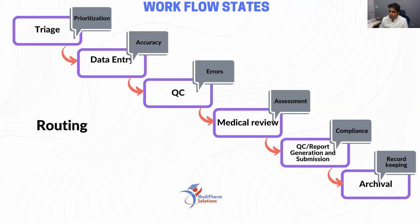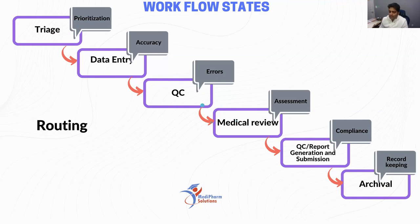What are some of the scenarios where you will back route a case? You will back route a case if you are doing too many case corrections that the previous case owner should be doing. For example, if you are in medical review and you see a lot of data to correct — the patient's initials are wrong, the date of birth is wrong, the narrative is incorrect.